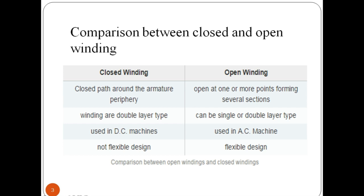On the other hand, closed winding are those with closed paths around a periphery. They are double layer winding and used in DC machines.